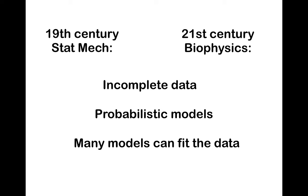We have a very similar scenario in 21st century biophysics. For instance, we have FRET probes on two different regions of a protein, and we monitor fluctuations in the distance between those FRET probes from fluorescence measurements. From this, we try to infer the incredibly complex structure, or the fluctuations in dynamics, of the entire protein. In both 19th century statistical mechanics and 21st century biophysics, we have very incomplete data and a very complex process giving rise to that very limited data.